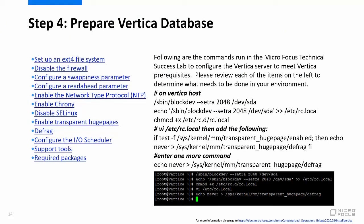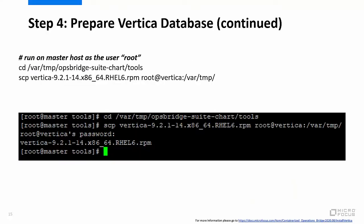Step 4 is to prepare the Vertica database. Before installing Vertica, complete the prerequisites from each of the Vertica documentation links displayed on your screen. Shown are commands run in the MicroFocus Technical Success Lab to configure the Vertica server to meet Vertica prerequisites. Please review each of the items on the left to determine what needs to be done in your environment. Next, copy the Vertica installation package from the master node to the Vertica node using the commands displayed on your screen.